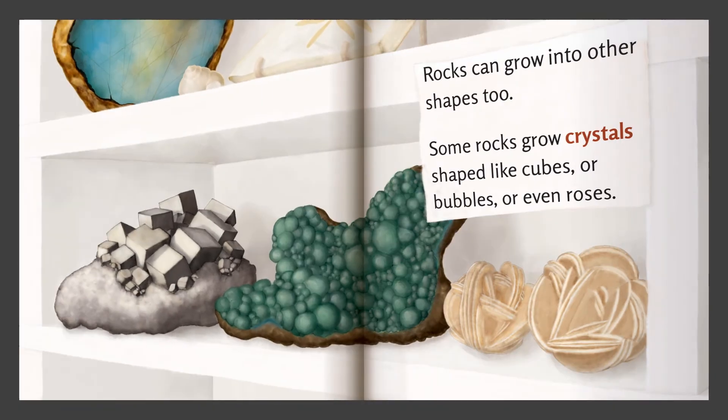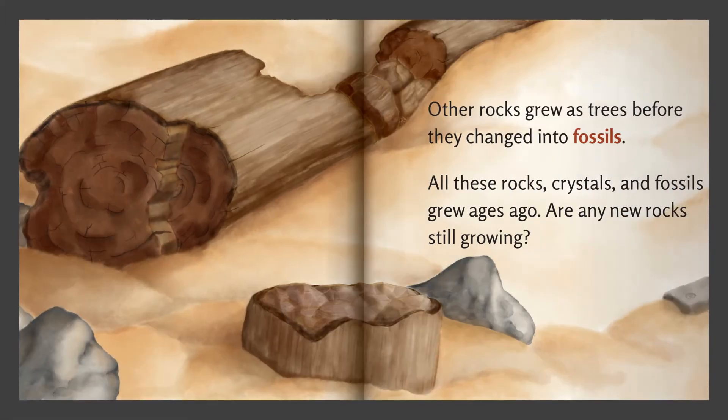Rocks can grow into other shapes, too. Some rocks grow crystals shaped like cubes or bubbles or even roses. Other rocks grew as trees before they changed into fossils. All these rocks, crystals, and fossils grew ages ago.